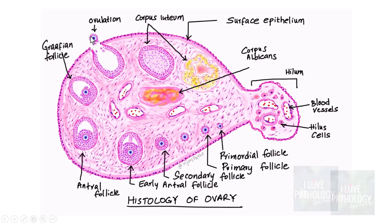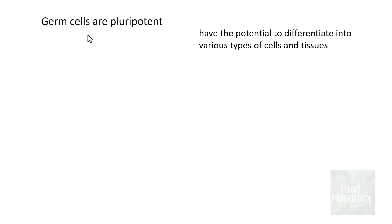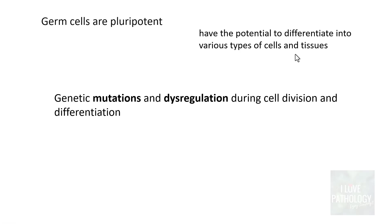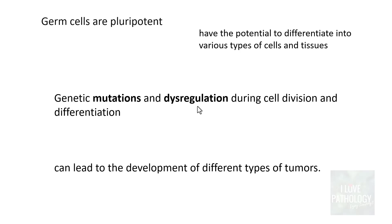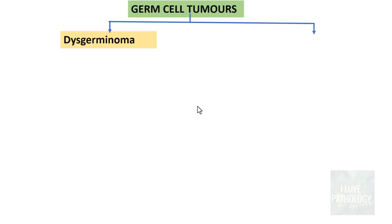We should also know that germ cells are pluripotent in nature, which means they have the potential to differentiate into various types of cells and tissues. In the process of cell division and differentiation, these cells can undergo mutations and dysregulation, and because of these mutations and dysregulations during cell division and differentiation, this can lead to the development of different types of tumors — that is what we call germ cell tumors. Now we will move on to understand the classification of germ cell tumors.